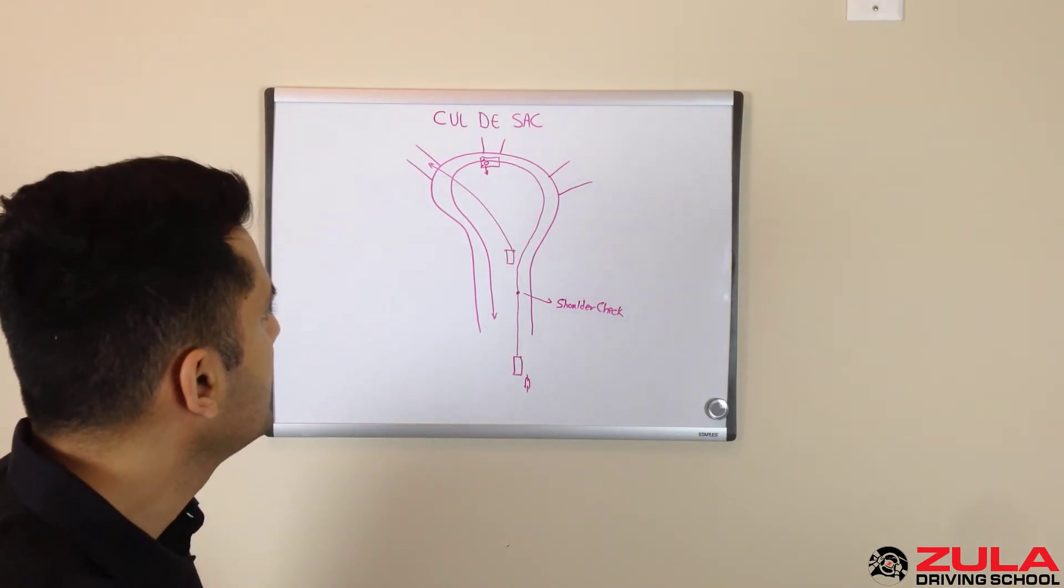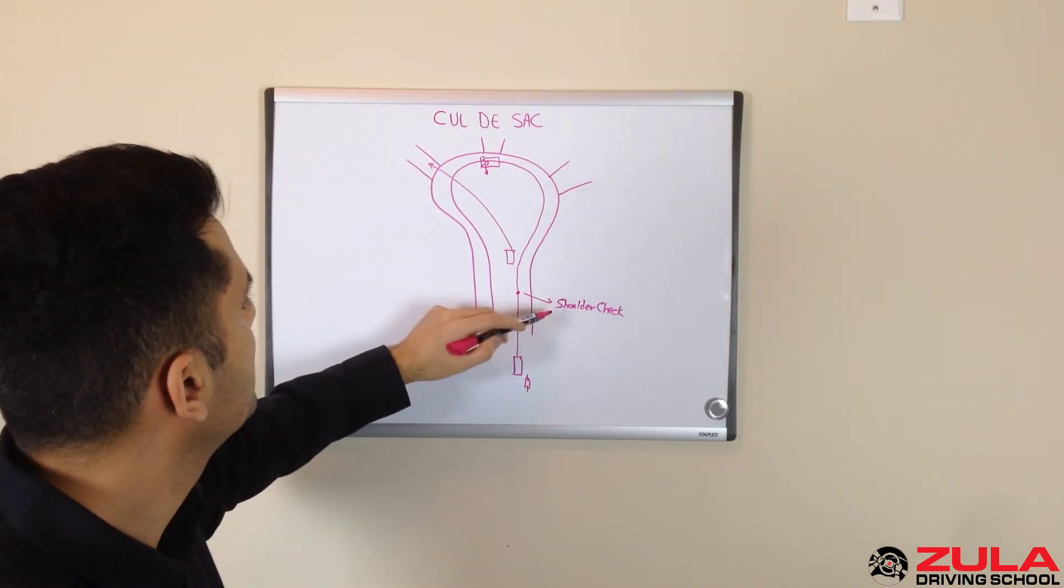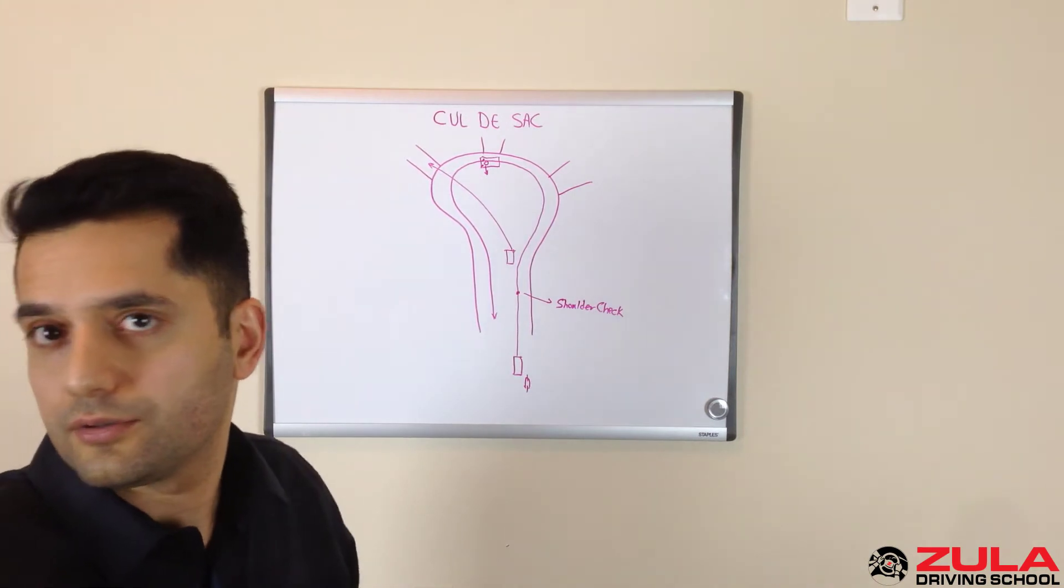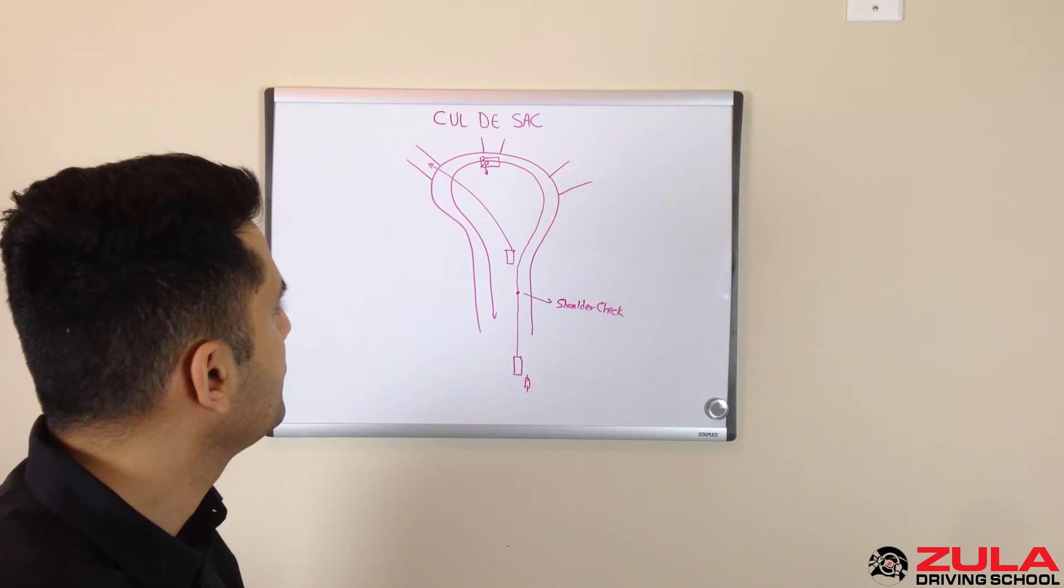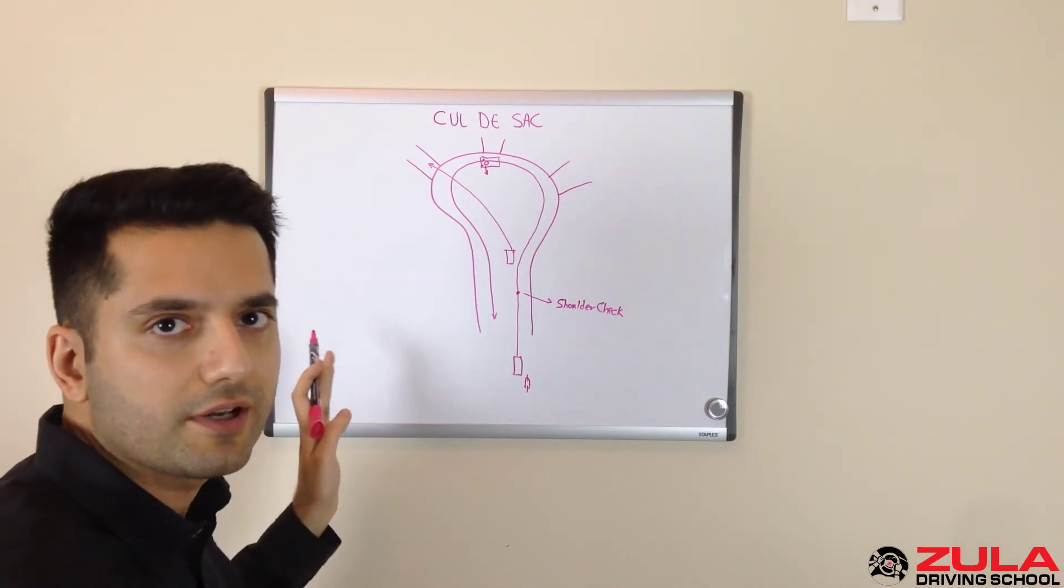And that's pretty much it. So no signal. Shoulder check before you get in. Shoulder check to your right. And when you're halfway into the circle, you want to look out your left side window here.